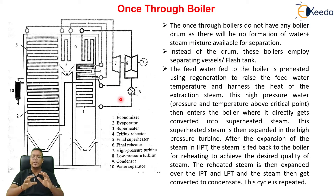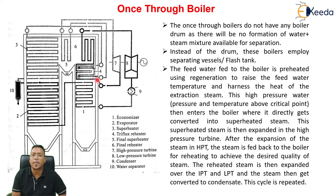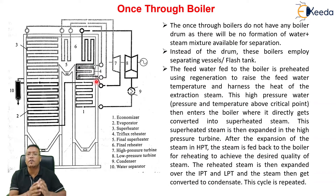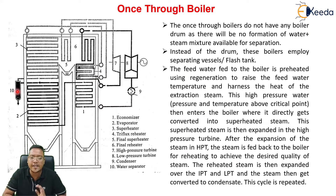This is a Sulzer-make boiler. In this case, there is a tri-flux reheater — we are using two reheaters. This reheater is taking heat from two sources: one is from the flue gas, and the second is from the steam going into the superheater. So this reheater takes heat from both the flue gas and the superheated steam, which is why it is called the tri-flux reheater. In this case, there is a flash tank and there is no steam drum.